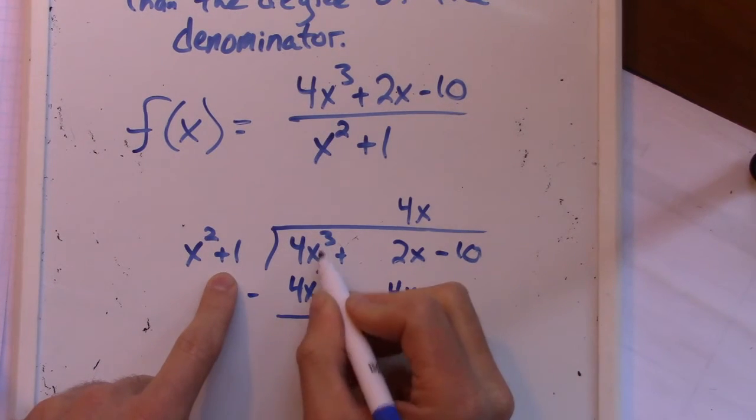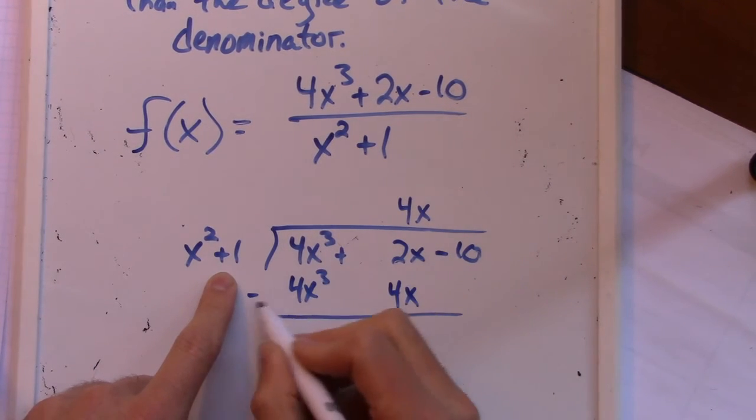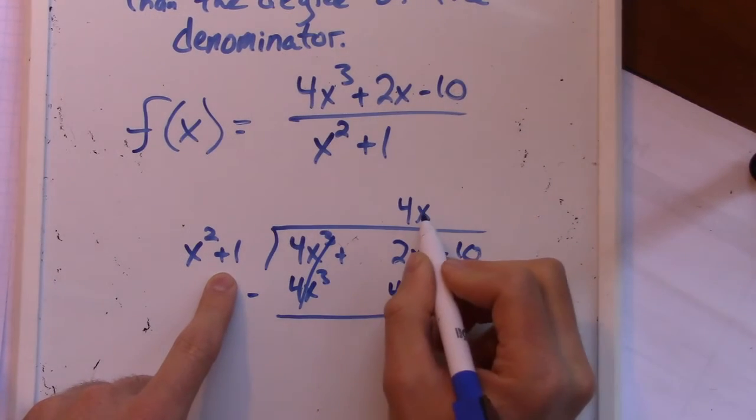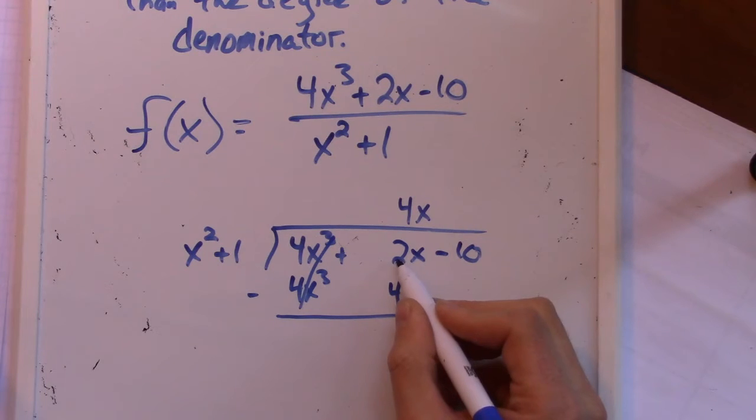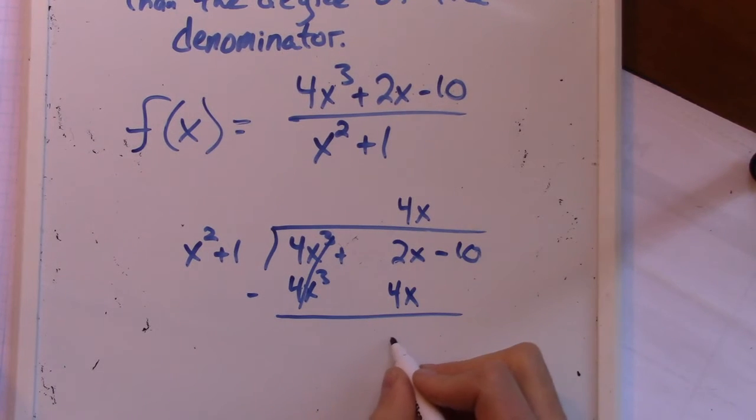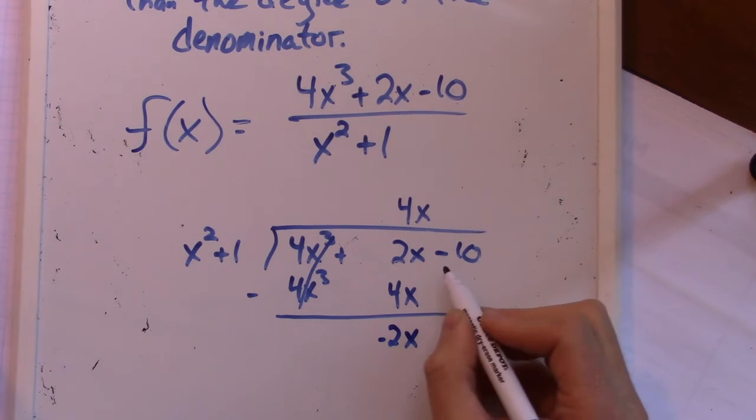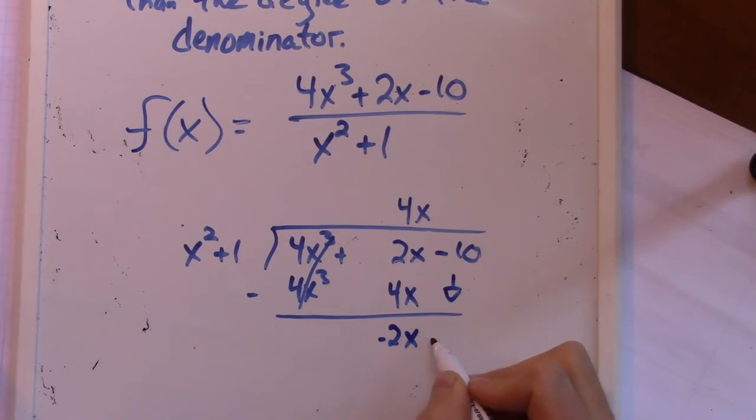So then you just subtract. So subtract straight down. This minus this, that's cancelled. That's the whole reason I came up with that. It's 0. There's no x squared term, so there's nothing right there. And then it's 2x minus 4x, which is negative 2x. And then the negative 10 comes down.